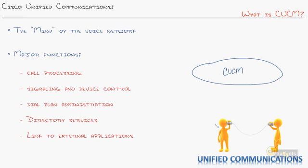CUCM was originally called Call Manager, and Cisco did not create it — they bought it. They actually acquired an entire company called Selsius, who created Call Manager and the original IP phones that Cisco started using. If you look at CUCM, it is a server — one or more servers inside your infrastructure — and that's what starts controlling the IP phone.